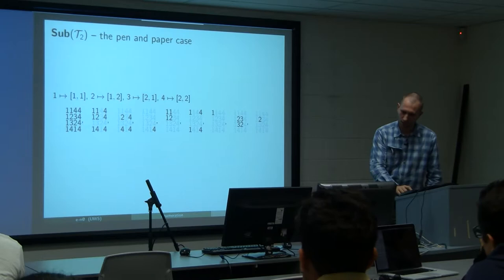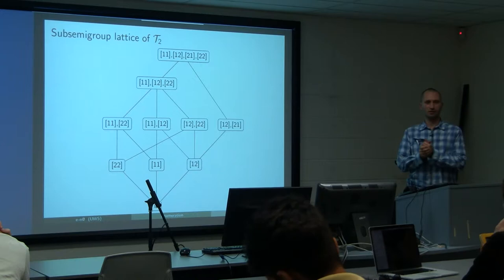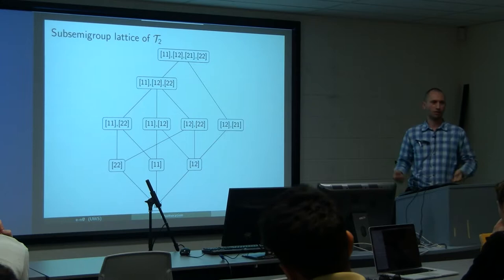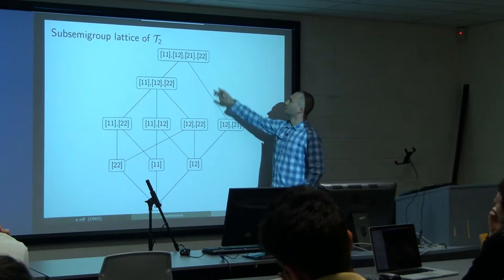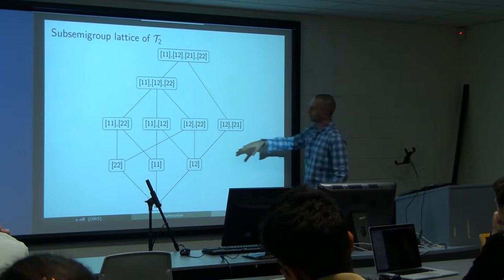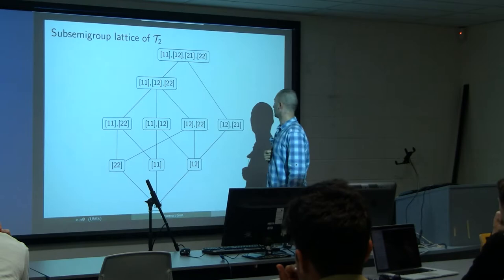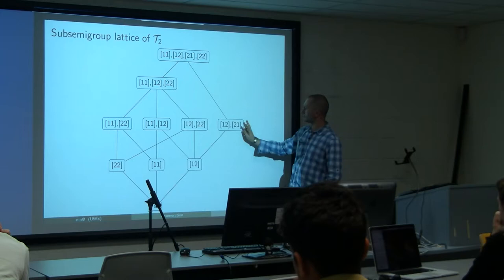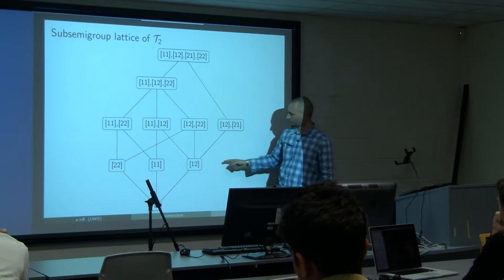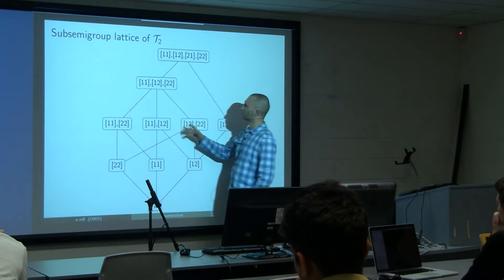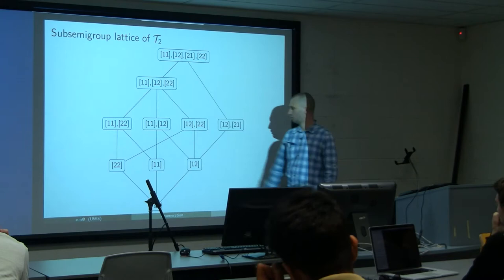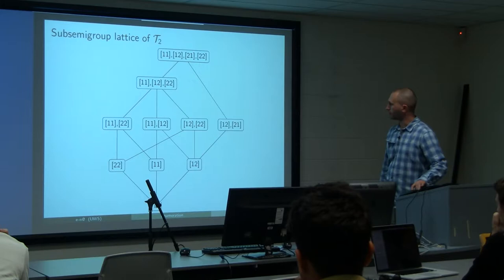T2 is what we call the pen-and-paper case. You sit down and can just work it out. This is the sub-semigroup lattice — the diagram showing how sub-semigroups are contained in each other. T2 itself has all transformations on two points. Here's the group: the identity and just the transposition swapping one and two. There's another group — just a trivial group. You can combine the identity with two constant maps and take sub-semigroups of that.